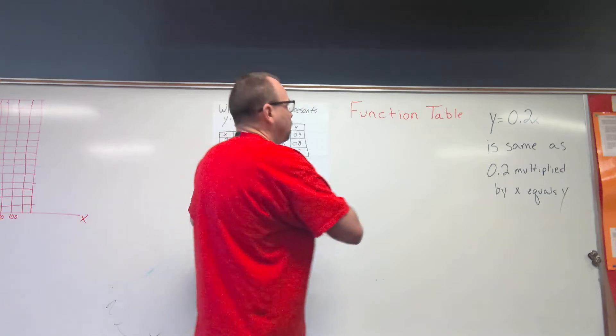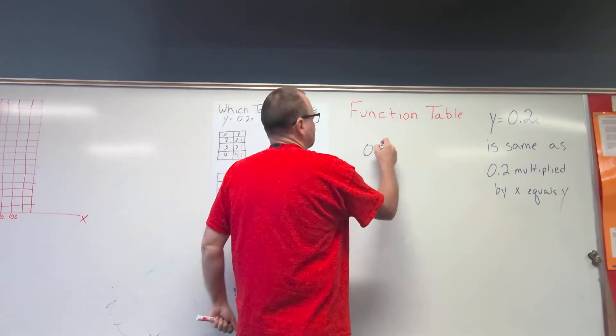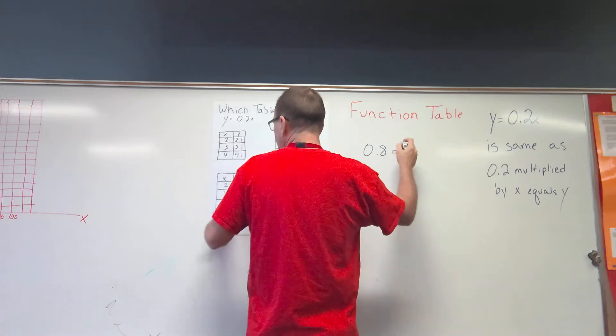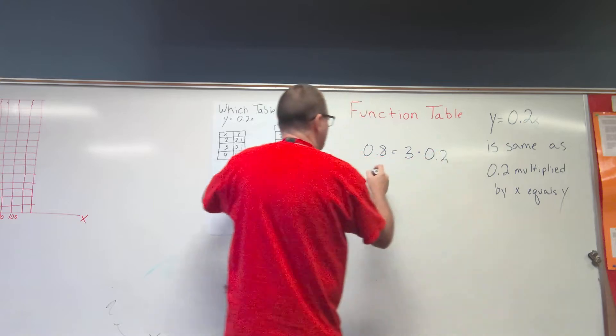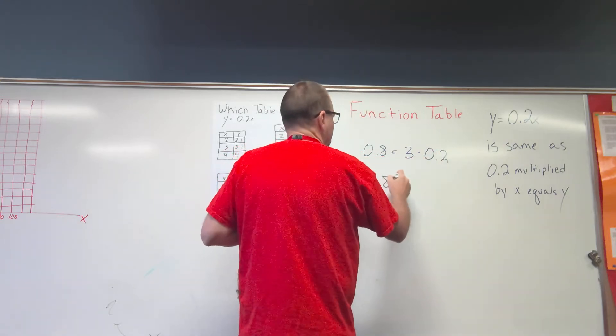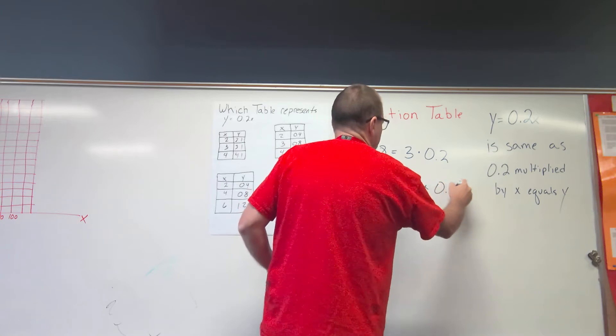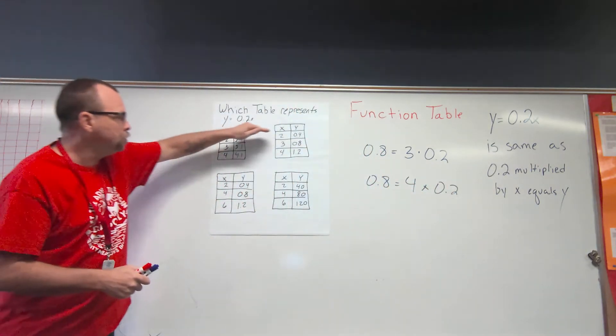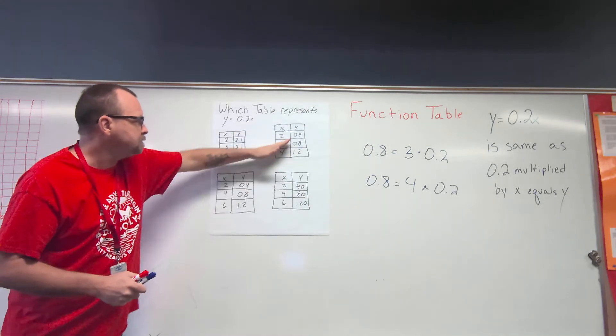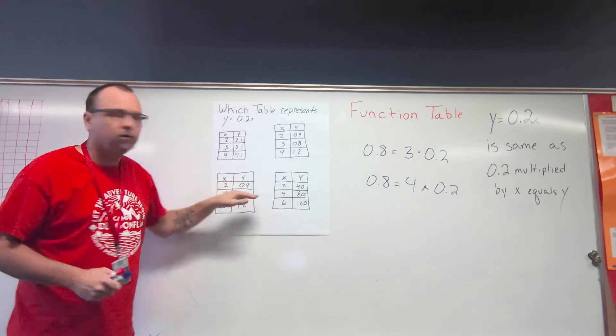So this is what I want to know: does eight tenths equal three times two tenths, or does eight tenths equal four times two tenths? That's all I have to figure out because my twos are the same, and now I'm checking my second part of my table.